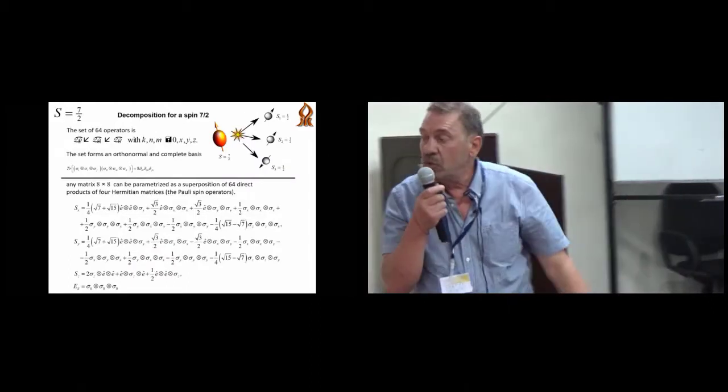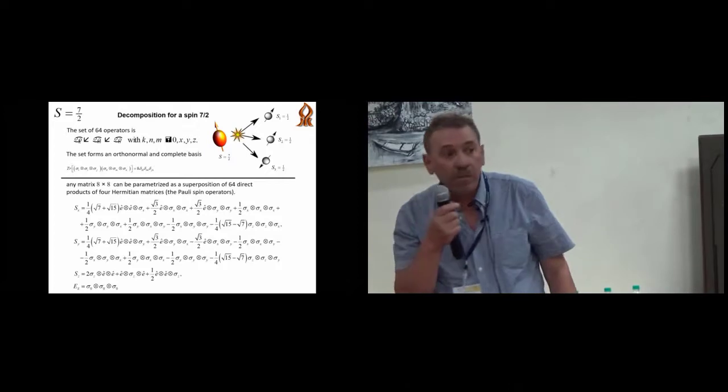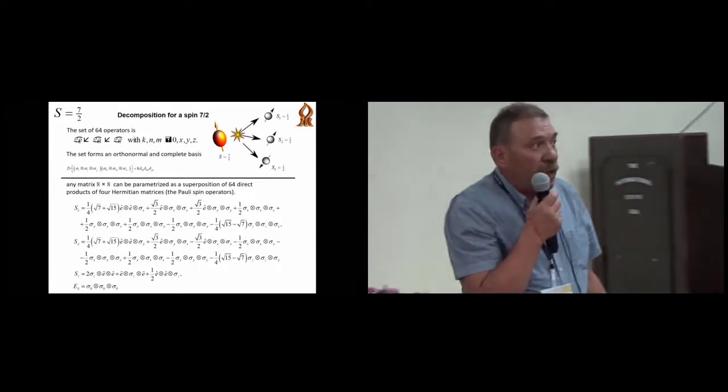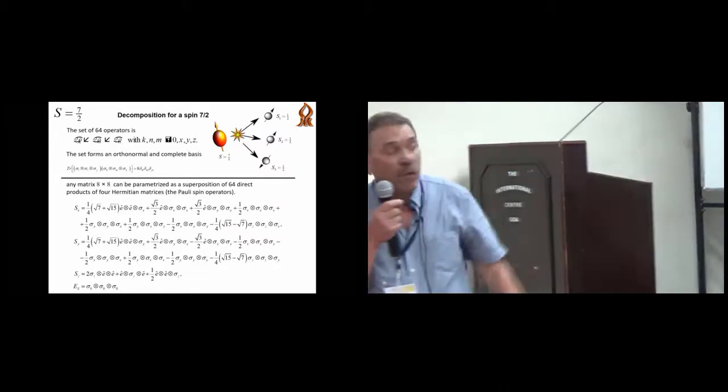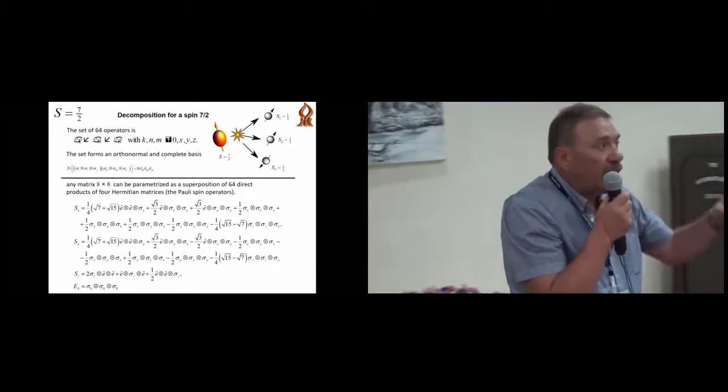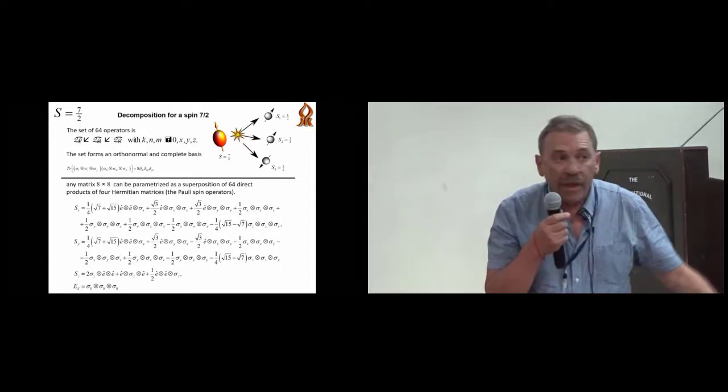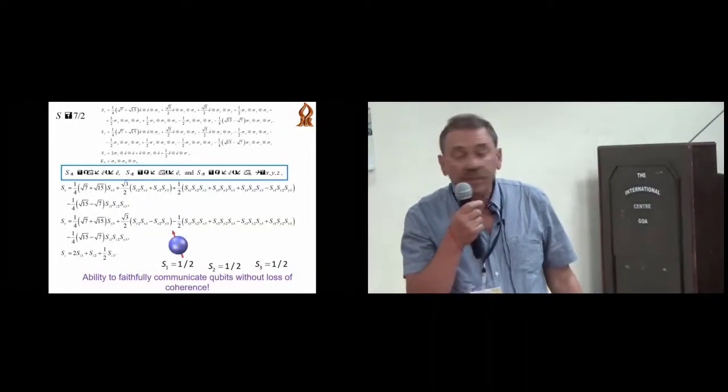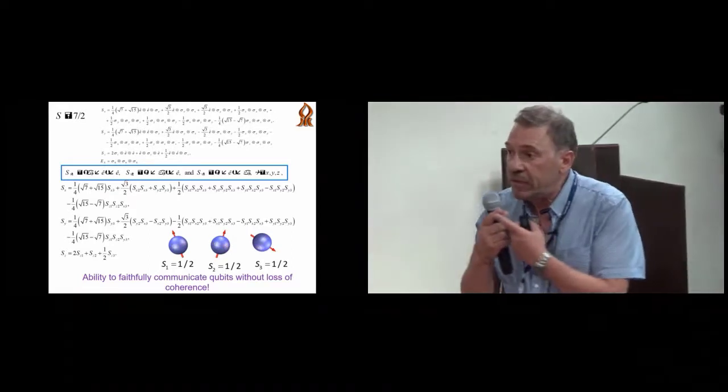We see that concurrence is not zero, so in this system we can produce the entangled state. Now another example, we can represent spin seven-halves.